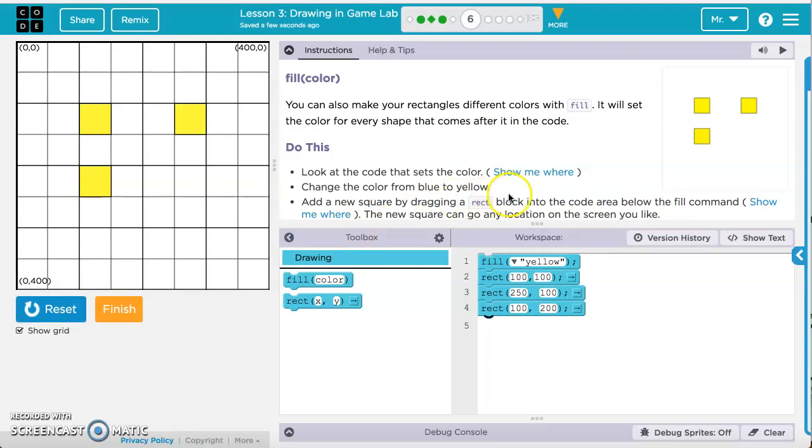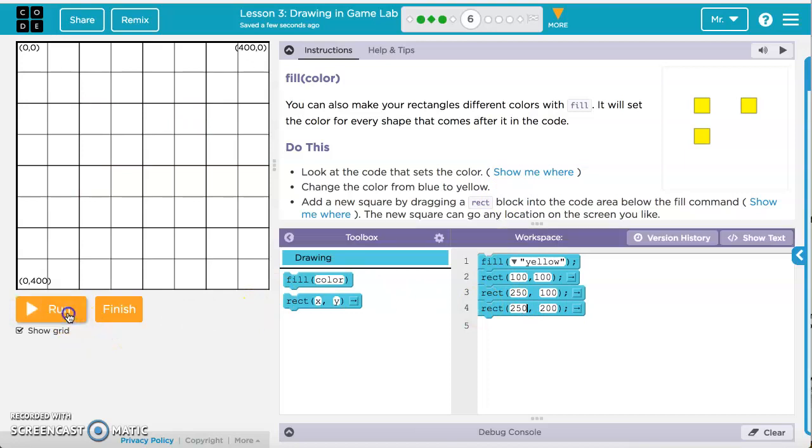But like it says here, you can put it in a different place if you'd like. I could do 250 for the X and 200 for the Y, and then we put it over underneath the other one.